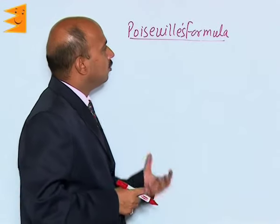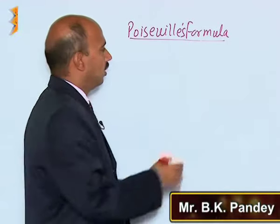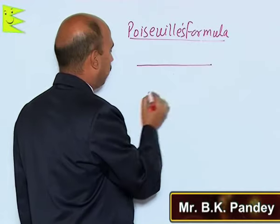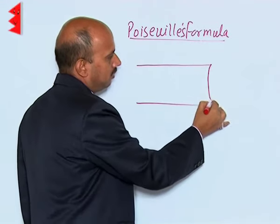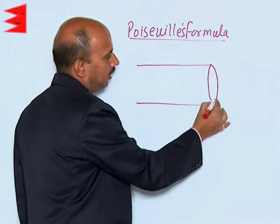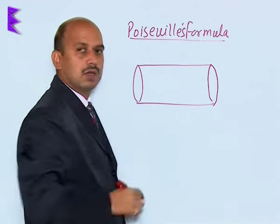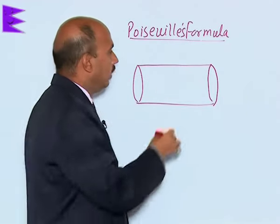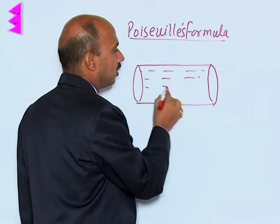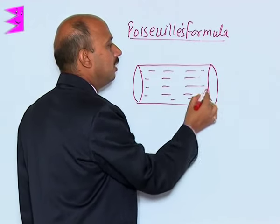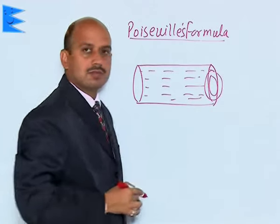See here, the next one is Poiseuille's formula. Suppose you have got a horizontal tube here, and this is a cylindrical tube. Liquid is flowing through this tube in layers, but these are the cylindrical layers and coaxial layers.